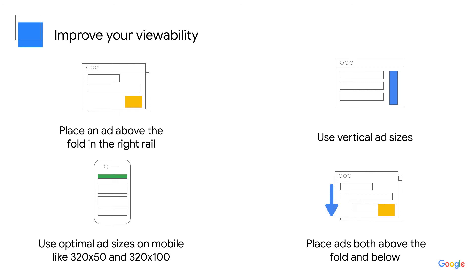Don't forget about ads below the fold. Ad units below the fold still have high viewability. In fact, 21% of below the fold ads have more than 50% viewability. You can also use vertical ad sizes, which can stay on screen longer as a user scrolls. Focusing on your user experience and viewability are great ways to ensure your ads are seen but not intrusive to users.